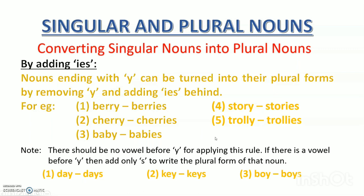But if there is a vowel before Y, we cannot use IES — we simply add S. For example, day: Y has A before it, and A is a vowel, so we say days — one day, many days. There are seven days in the week. Key: Y has E before it, E is a vowel, so we say keys — ek chaabi, many keys; Y is not removed, just S is added. Boy: Y has O before it, O is a vowel, so boys. Adding IES is now clear.